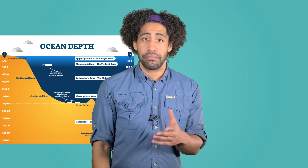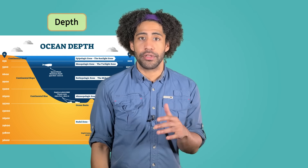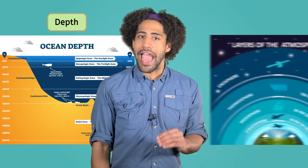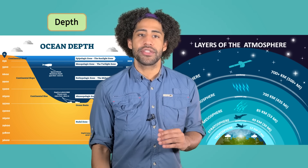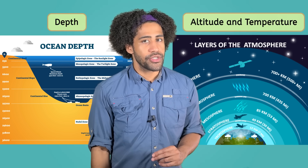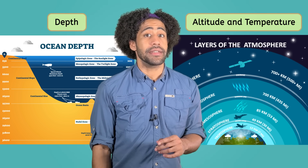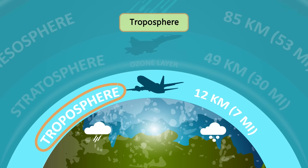The atmosphere is made up of five main layers. Remember the zones of the ocean? They change based on the depth below the ocean's surface. The layers of the atmosphere, however, change based on two things: altitude, or the height above the ground, and temperature. The first layer is the troposphere, which is closest to the Earth's surface. This is where we live, and it extends from the ground to about 12 kilometers high — a few kilometers above the tallest mountain in the world, Mount Everest.